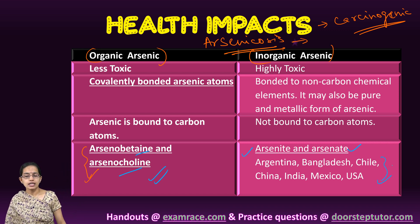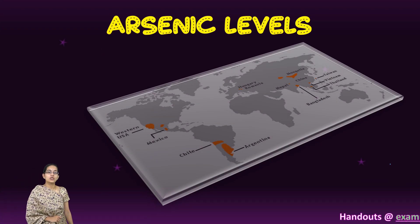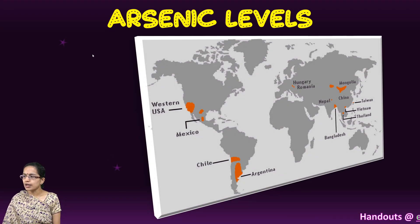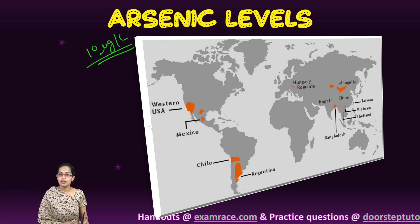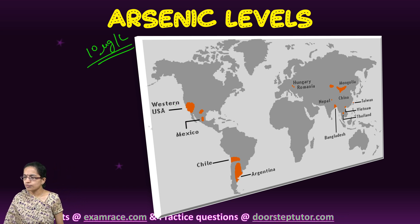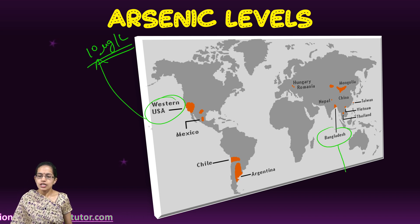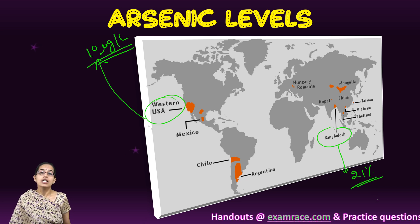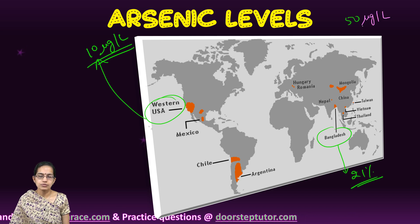Countries such as Argentina, Bangladesh, China, India, Mexico, and the US are classic examples of arsenic-affected regions. The WHO guidelines recommend a permissible limit of 10 micrograms per litre, which is also adopted by the United States. In Bangladesh, 21% of total deaths are attributed to high proportions of arsenic in the soil. In India, the permissible limit is set at 50 micrograms per litre, which is already much higher than the WHO recommendation.